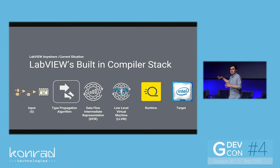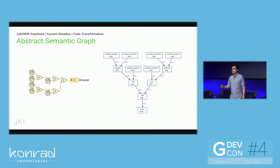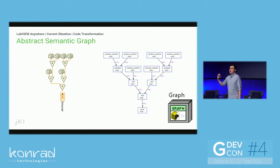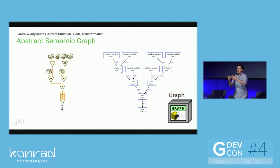It's about this stage in the compiler stack where we go from G into some sort of IR — intermediate representation. Whenever we program in G, we are creating a graph. Every VI you create is a graph. We can represent this graph as an object, perform algorithms on it, do some optimisations, traverse through it and delete anything that might not be called. I've taken a graphical language, transformed it into IR, an abstract semantic graph — which is an object — but for the slide I've made it graphical, so we've gone full circle back into G.